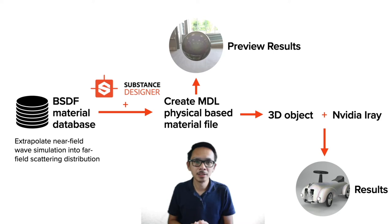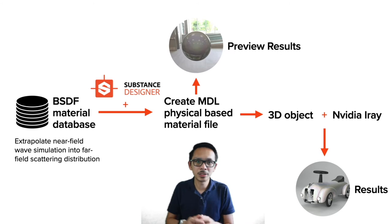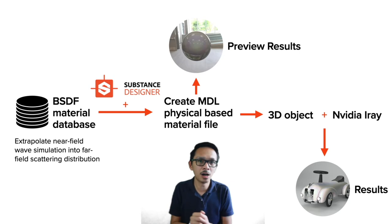After that, we use Substance Designer to create the MDL file with the BSDF data we have. We took advantage of Substance Designer, which allowed us to preview the colors. We then create the material file and apply it to a 3D object with the render array.